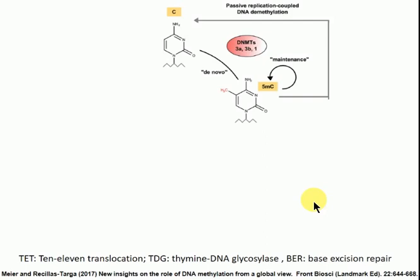One is known as passive replication-coupled DNA demethylation. This is TET-independent. Basically, if you have a methylated CpG site, it has to always be maintained by DNMT1 during replication. If something goes wrong in that maintenance process and a mistake is made, your methylation pattern gets removed. So this is passive and replication-dependent.